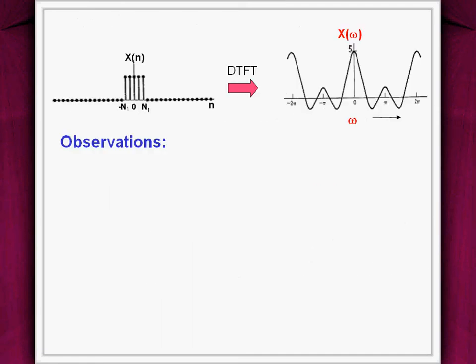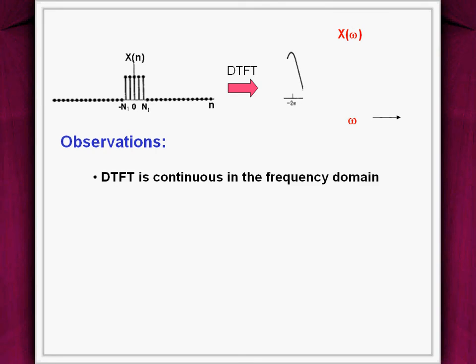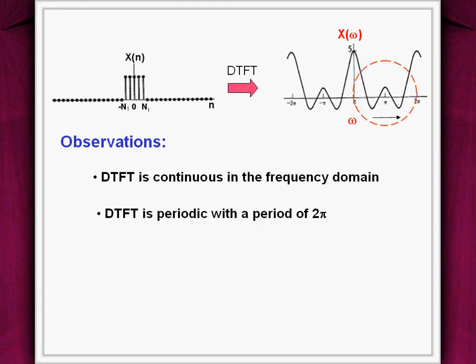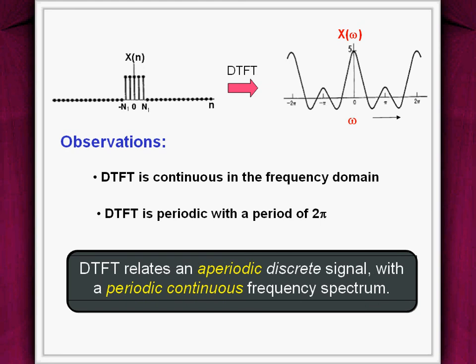This is the resultant plot of DTFT. It is observed from the plot that the spectrum of DTFT is continuous, and secondly, the spectrum is periodic with a period of 2π. Thus, DTFT relates an aperiodic discrete signal with a periodic continuous frequency spectrum.